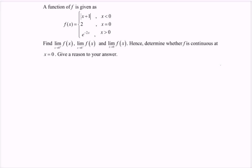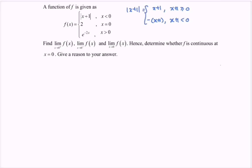A function f is given as below. Notice that we have the modulus x plus 1. We need to define the situation. So for modulus x plus 1, the first part is positive (x plus 1) when x plus 1 is greater than or equal to 0, and the second part is negative (x plus 1) when x plus 1 is less than 0. Simplifying, modulus x plus 1 equals (x plus 1) when x is greater than or equal to negative 1, and negative (x plus 1) when x is less than negative 1.